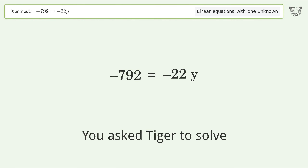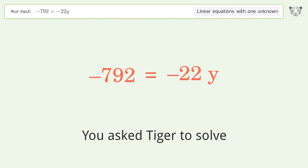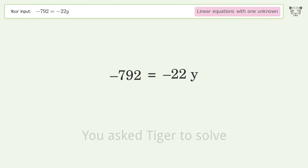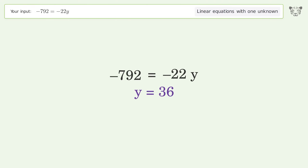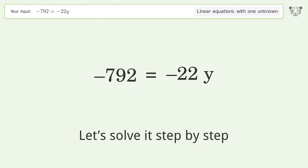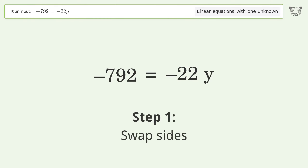You asked Tiger to solve this — it deals with linear equations with one unknown. The final result is y equals 36. Let's solve it step by step: swap sides.